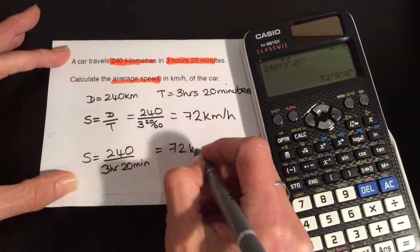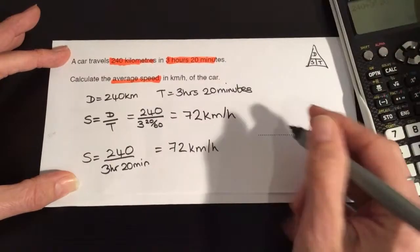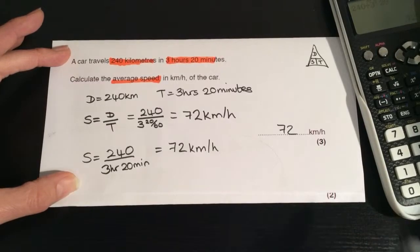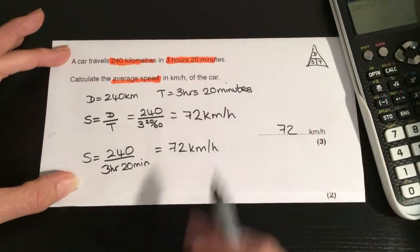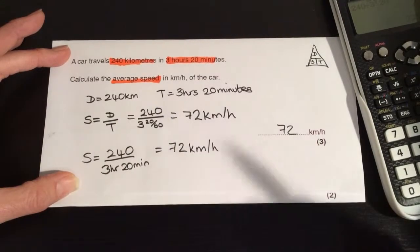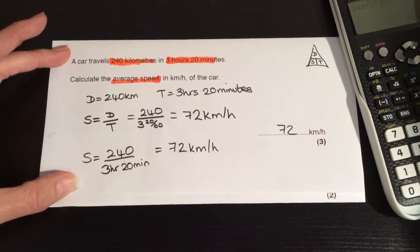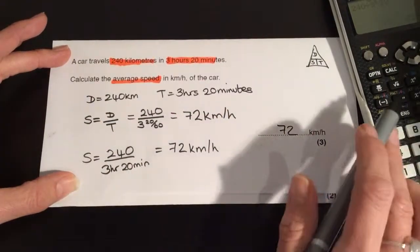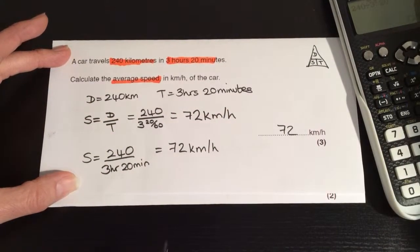72, which we put on the answer line. And that is how to do this calculation. The main misconception and why you probably wouldn't get full marks is because you might put 3.2 into your calculator instead of either the mixed number or using the new button that I've shown you on the calculator.